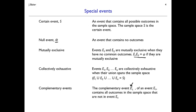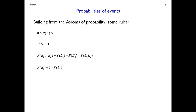All of the operations so far — intersections, unions, and complements — have only dealt with events and outcomes, not probabilities. Now we can start thinking about some rules for probability. The probability of any event must be between 0 and 1. The probability of the sample space is 1. The probability of E1 ∪ E2 equals the probability of E1 plus the probability of E2 minus the probability of the intersection of E1 and E2.